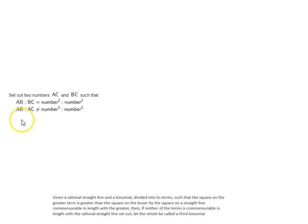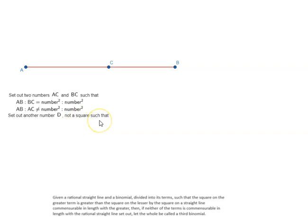Now let's see how to actually find this third binomial line. Set out two numbers AC and BC such that AB is to BC equals a number square to a number square, but AB is to AC is not equal to a number square to a number square. Also set out another number D, not a square, such that D is to AB is not equal to a number square to a number square, and D is to AC is not equal to a number square to a number square.